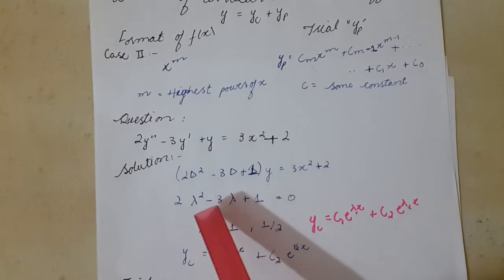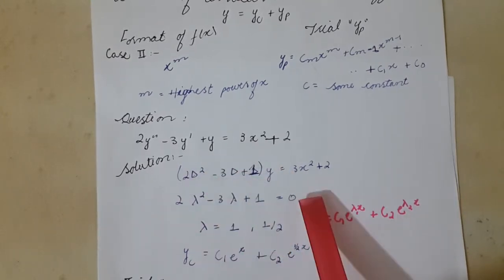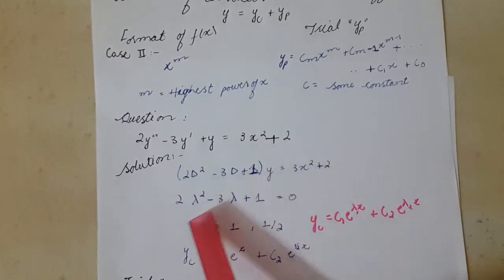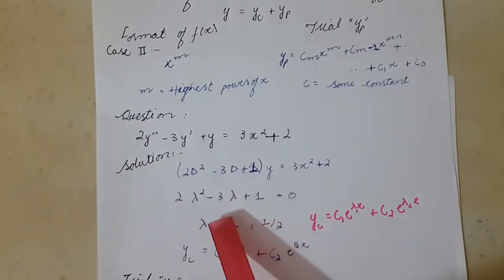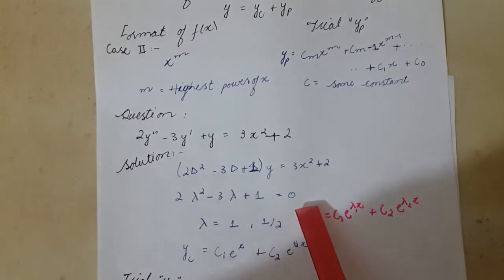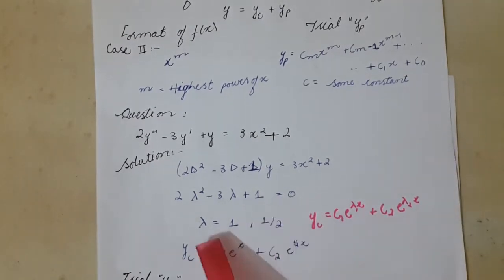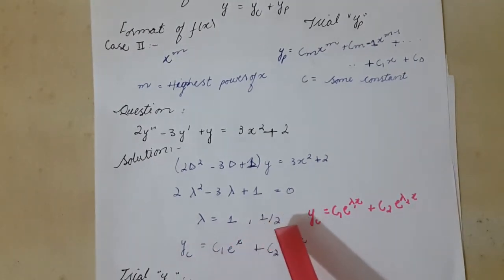Now for roots we will take this part equals to 0. Suppose our roots are lambda. So 2λ² - 3λ + 1 = 0. Here roots equal 1, half.